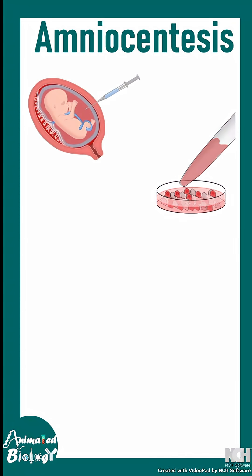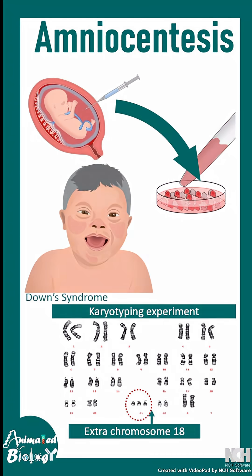Another application of amniocentesis involves karyotyping. Amniocytes can be cultured in the lab, followed by karyotyping to detect conditions like Down syndrome, where there is an extra chromosome.